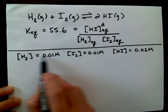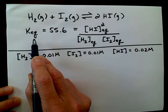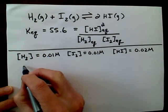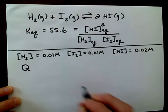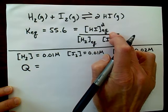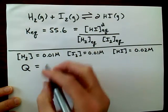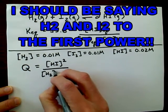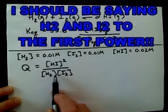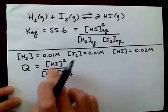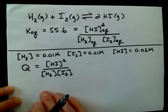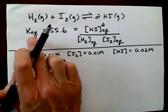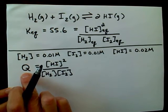We can't call what we're about to calculate K, because K only works when we know that these values are at equilibrium. So what we do is we call this Q. Q has the same form as the equilibrium constant ratio — it's just HI squared over H₂ times I₂ — but we don't put the subscript EQ because we don't know if these are equilibrium values. We're calling it Q rather than K_eq because Q can be calculated any time we want.